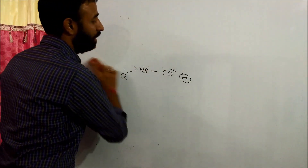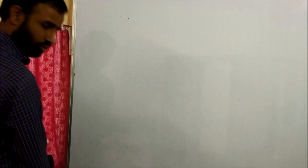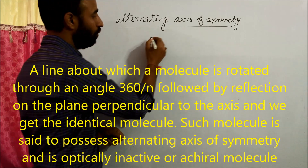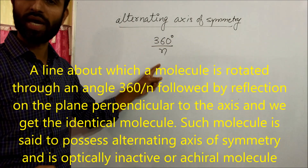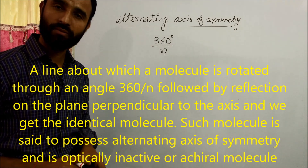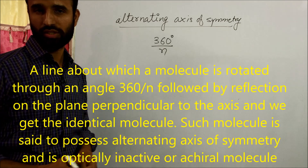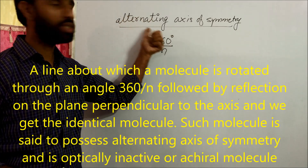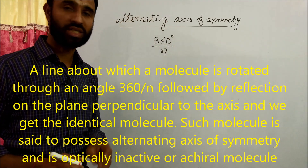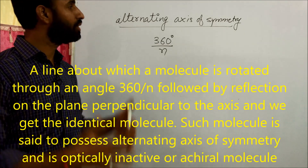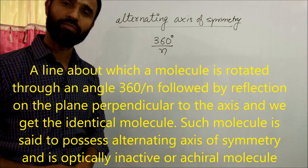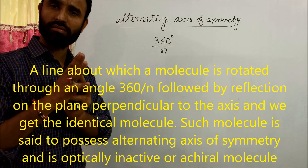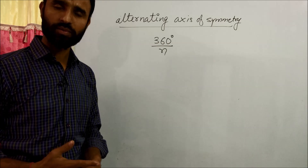The third element of symmetry is alternating axis of symmetry. An alternating axis of symmetry is an axis about which a molecule is rotated by 360°/N, followed by reflection in a plane perpendicular to the axis. If we get an identical molecule, then the molecule is said to possess an alternating axis of symmetry, and such molecules are optically inactive. This element is rare, so it does not need detailed discussion.